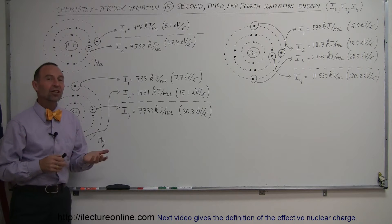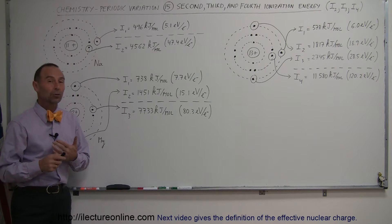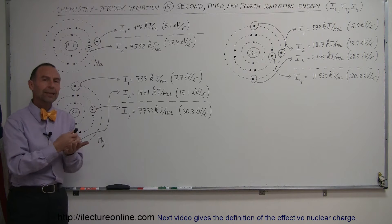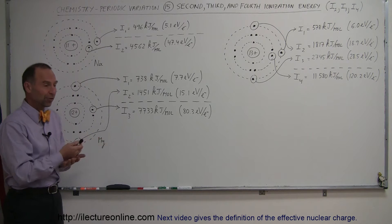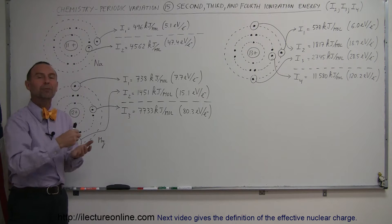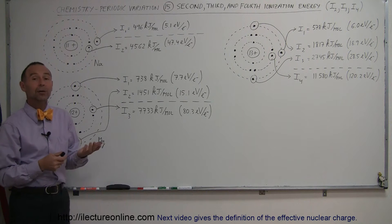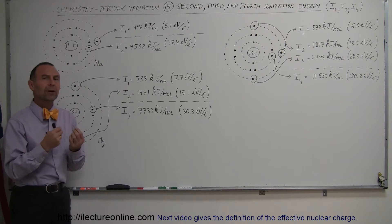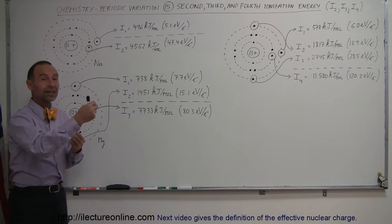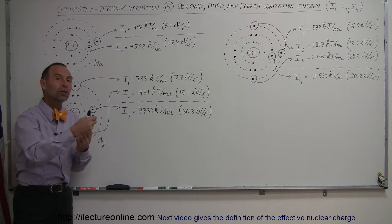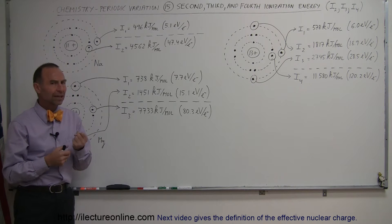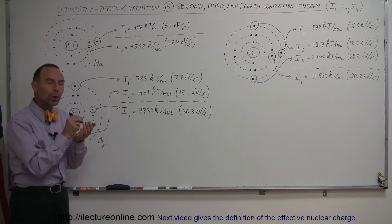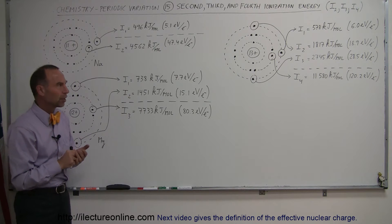Now we're going to talk about ionization energies required to remove a second, a third, or a fourth electron. Typically, ionization energy is referenced to removing a single electron from an atom, making it into a cation with a single positive charge. But we can also figure out how much energy it requires to pull a second, third, or fourth electron off. The amount of energy it takes depends a lot upon which atom it is and where that electron is located.